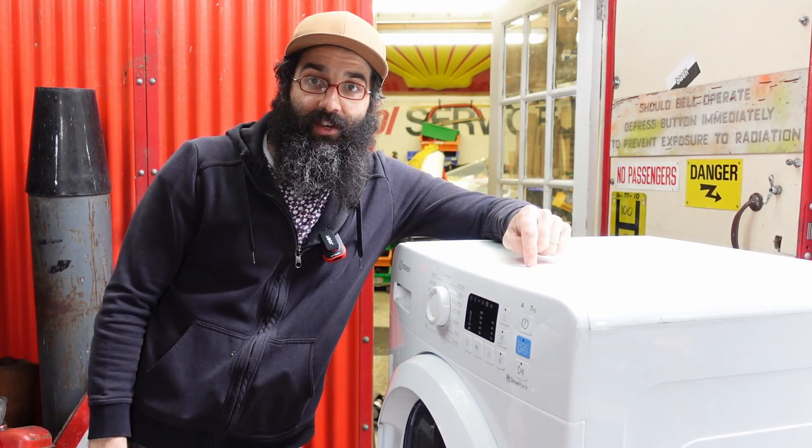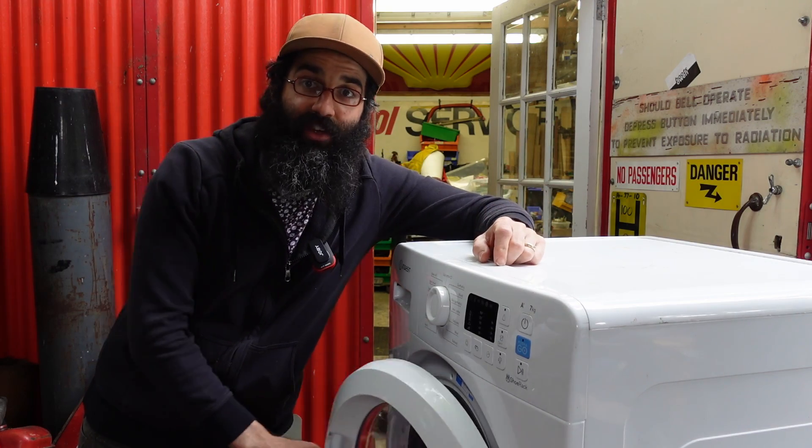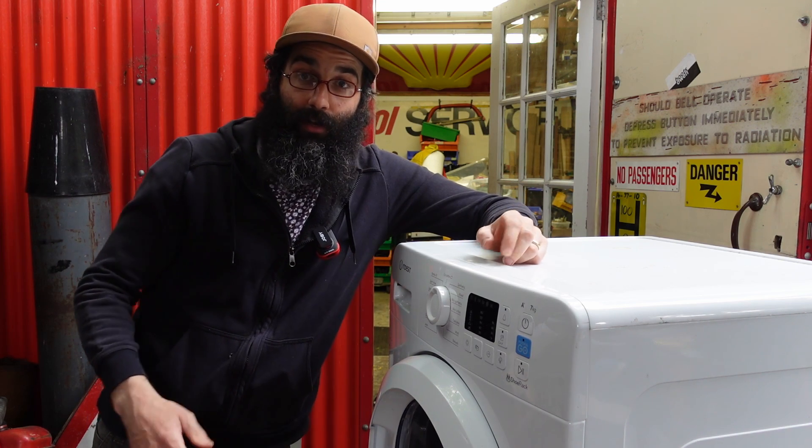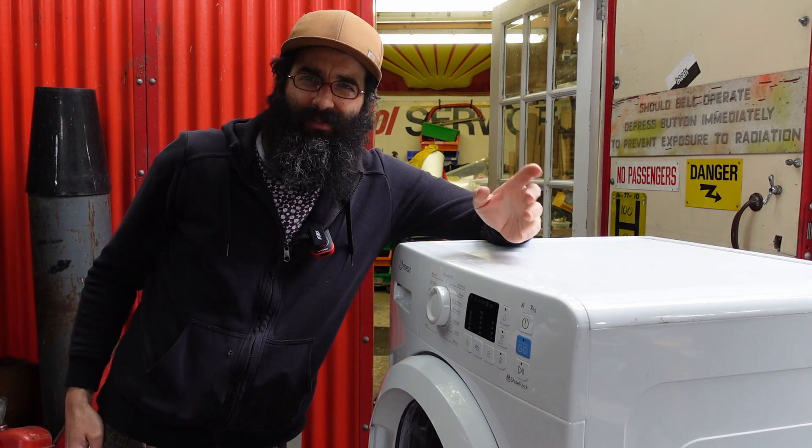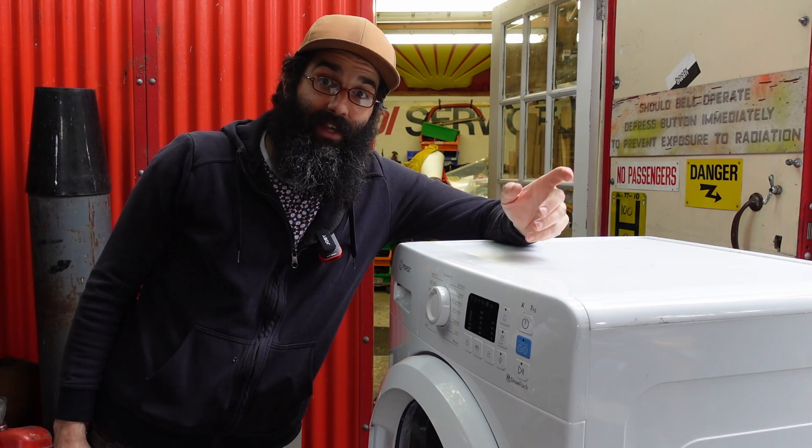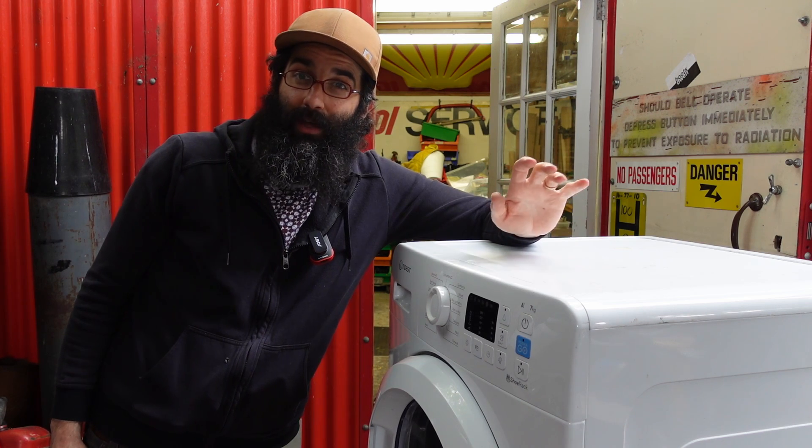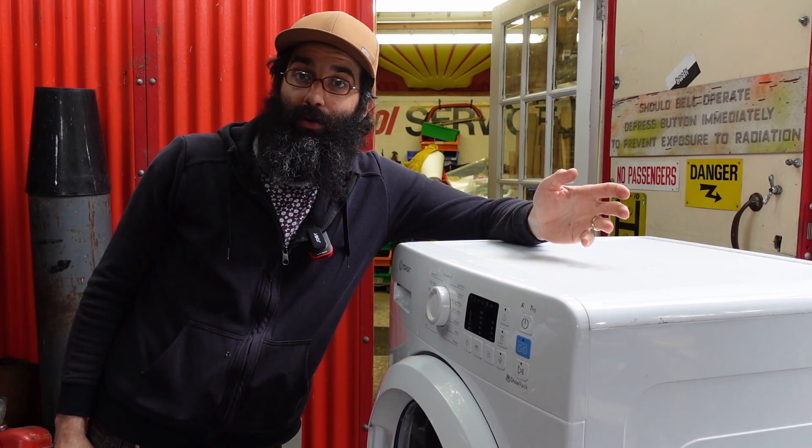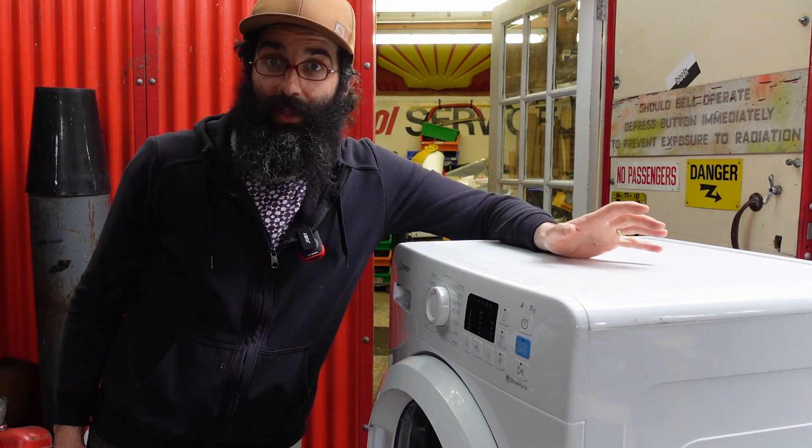Hey there, Boots Owen here. This is an Indesit tumble dryer, YT M1071R UK is the model. I got it for free off Gumtree, maybe. The guy told me that the pump was gone and that was that. So I got a new pump, fitted it and it worked. I've made a video of that.